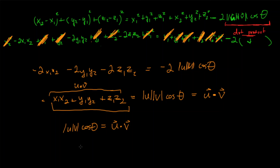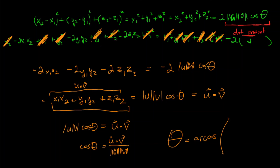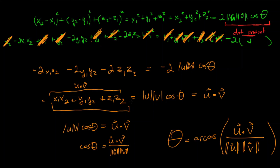All of that junk canceled out from the law of cosines, and we're left with the dot product: the product of x-components summed with the product of y-components summed with the product of z-components. We have the dot product again. So U · V = |U||V|cos θ, which means cos θ = (U · V) / (|U| |V|), and therefore θ = arccos(U · V / (|U| |V|)). This will always give you the angle less than 180 degrees.